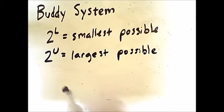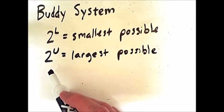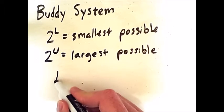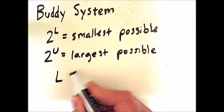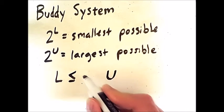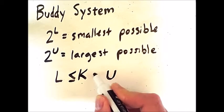The size of the largest partition is generally the size of all available memory. In this approach, we will repeatedly split regions of memory into two equal-sized partitions. L must be less than or equal to U, but there are also various values of K.